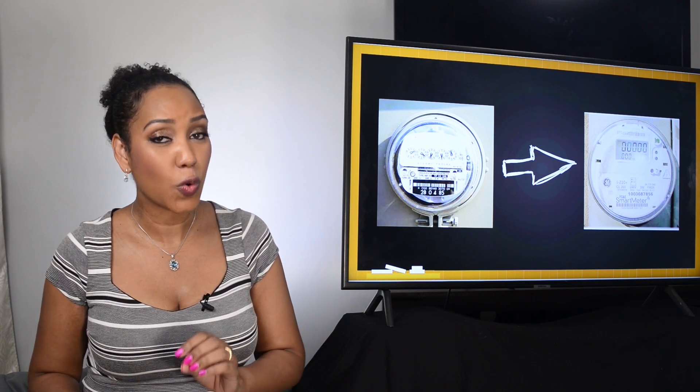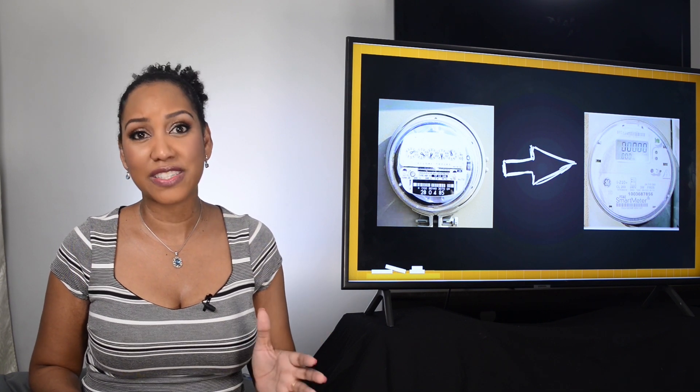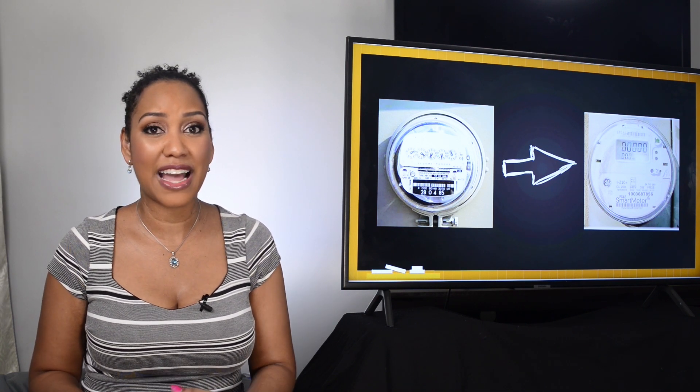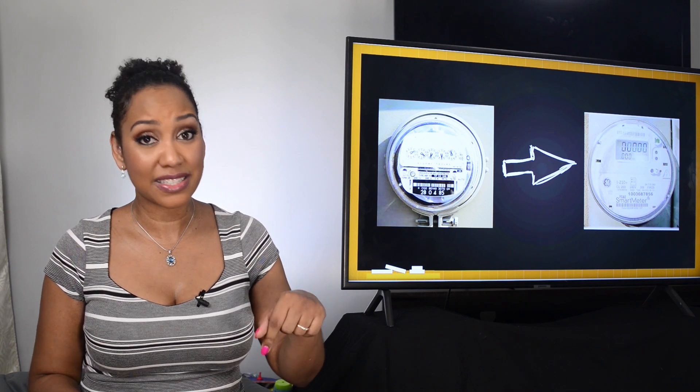They replace the old style meters which means that there's no need for a meter reader to visit your property anymore. JPS began rolling out smart meters in 2016 with the aim to have at least half of the population covered by smart meters by this year, 2020.